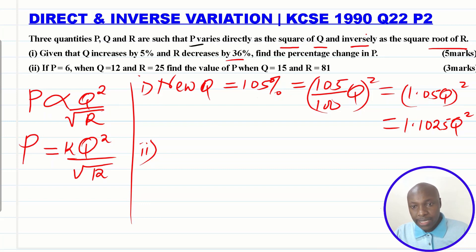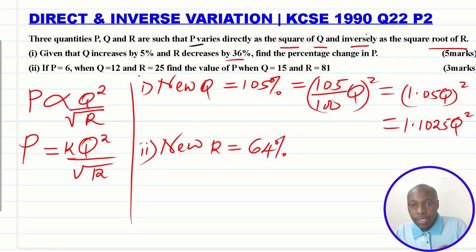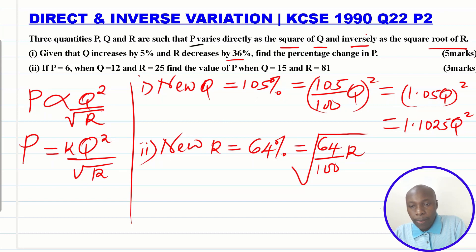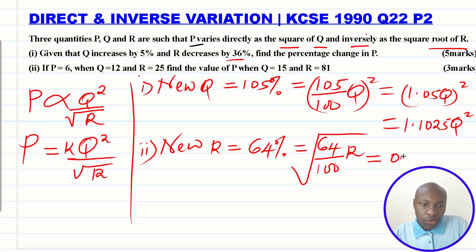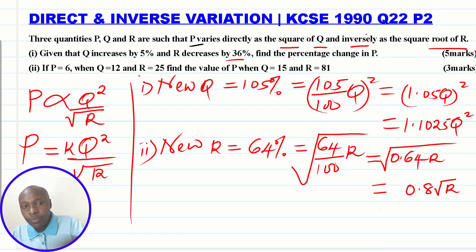R decreases by 36 percent. The original r is 100%, so new r is 100% − 36% = 64%, which is 0.64r. In the equation we need the square root of r, so we take √(0.64r). The square root of 0.64 is 0.8, so the new square root of r term becomes 0.8√r.